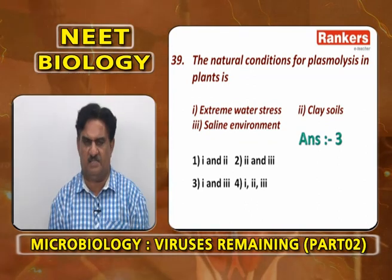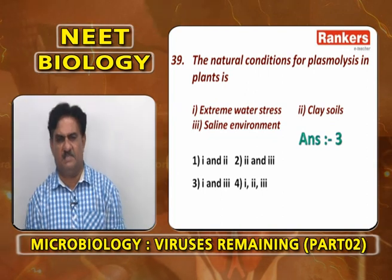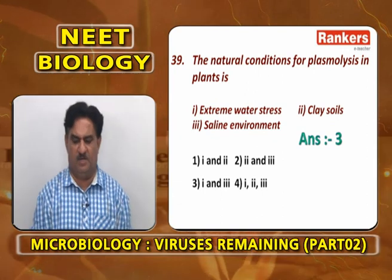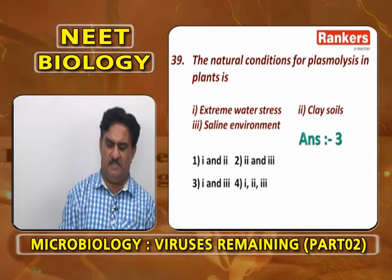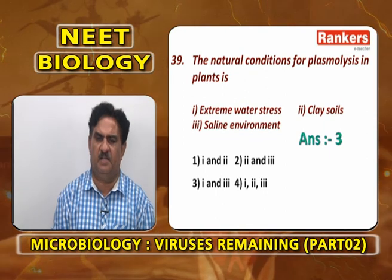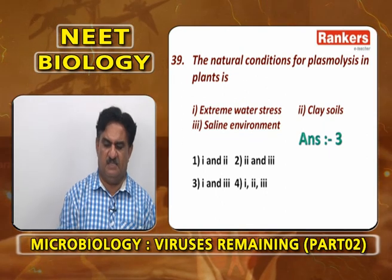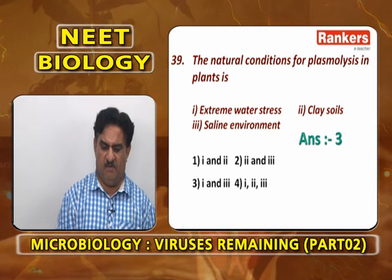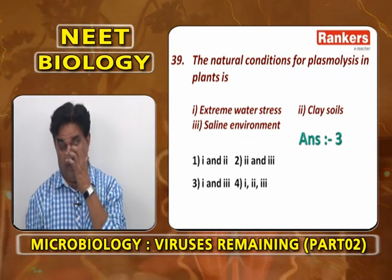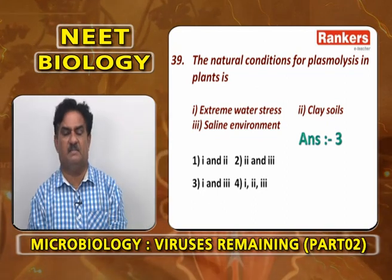That is extreme water stress. Because of this reason, abscisic acid is also called stress hormone. Extreme water stress does not show any cause of plasmolysis. Saline environment — whenever the surrounding environment is saline, plasmolysis occurs.